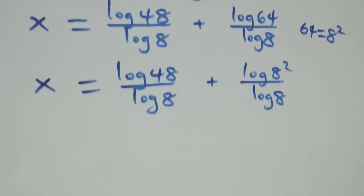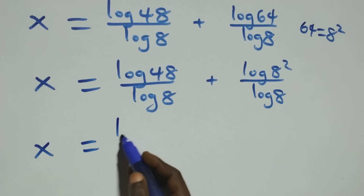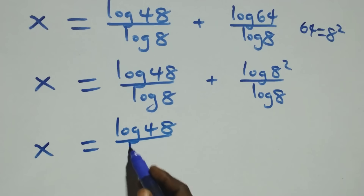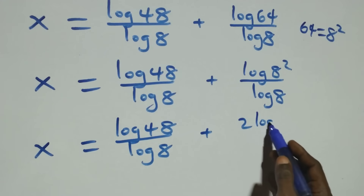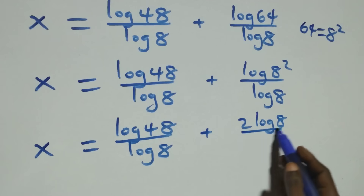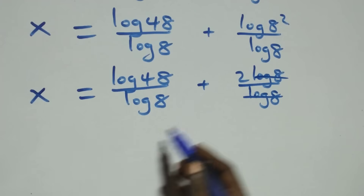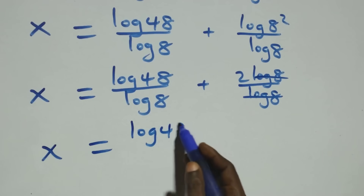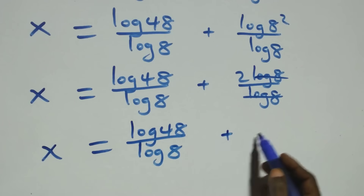Then, we apply the power rule of logarithms. What we have here becomes x equals log 48 over log 8 plus 2 log 8 over log 8. Now, log 8 cancels each other, leaving 2, so we have x equals log 48 over log 8 plus 2.